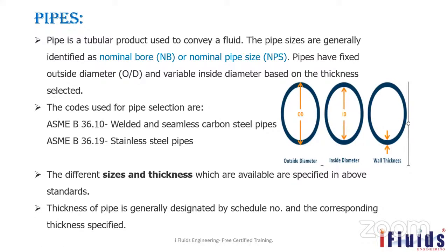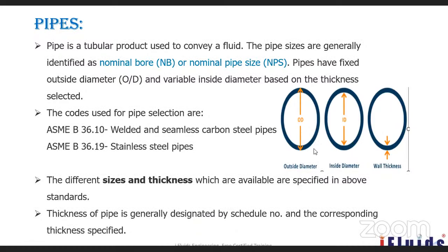The thickness of a pipe is designated by schedule. If the schedule increases — schedule 40, schedule 80, schedule 120, schedule 160 — the wall thickness increases and the ID gets reduced, while the OD remains constant. So for a 1 inch pipe, the OD will be the same for schedule 40 and schedule 80, but the ID will differ.